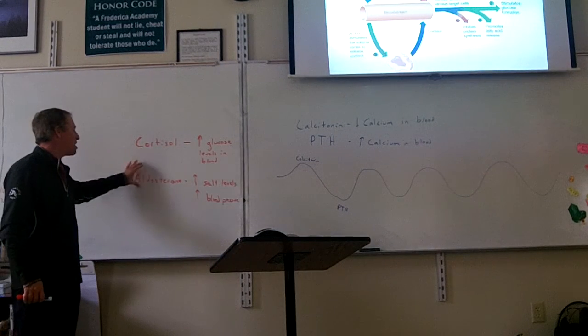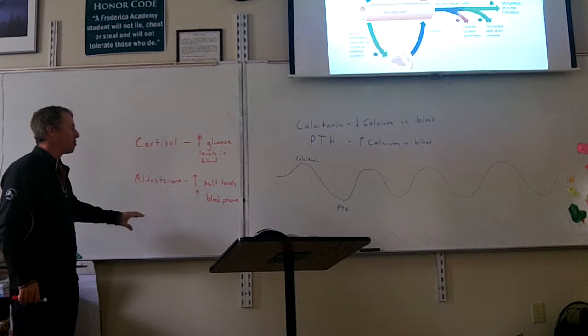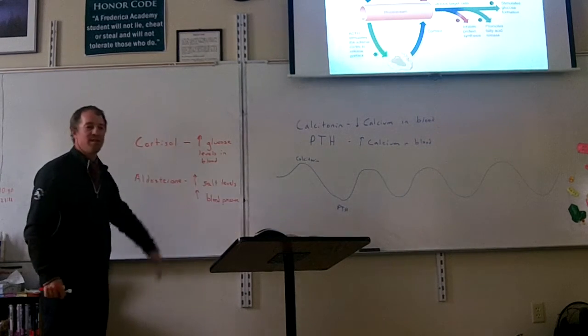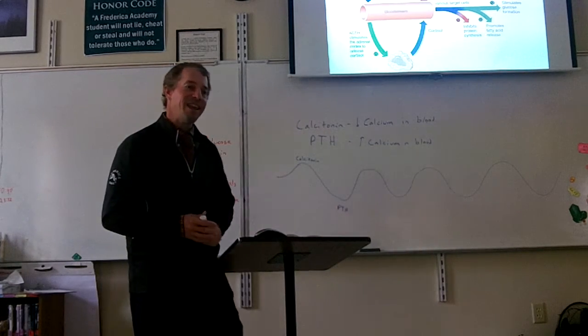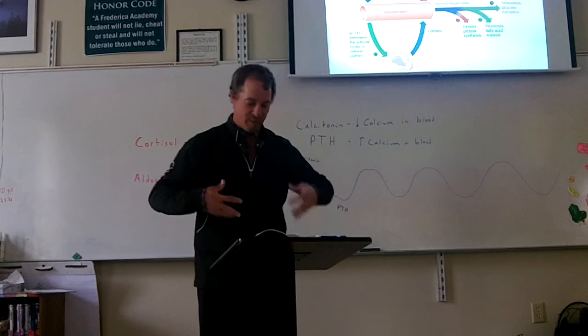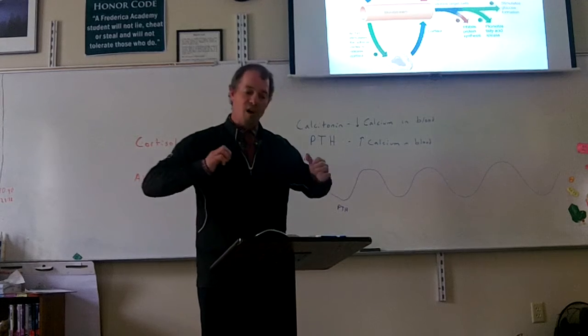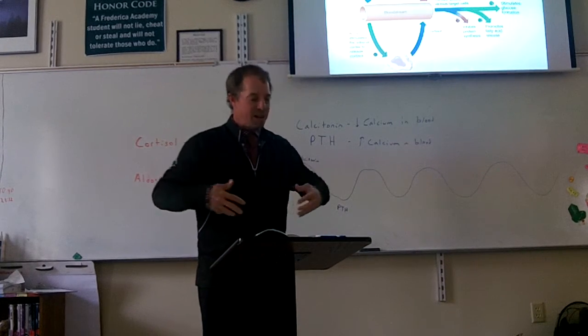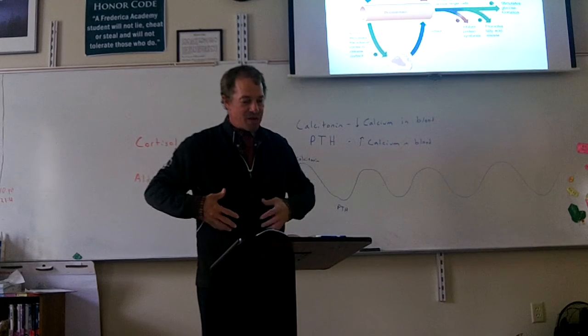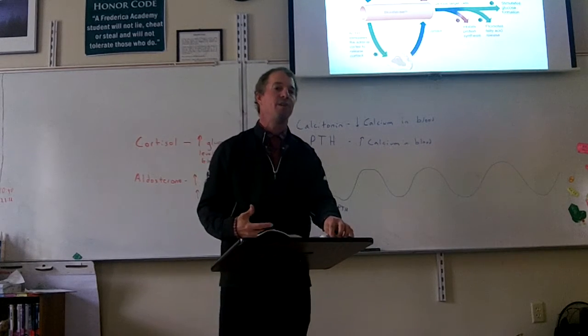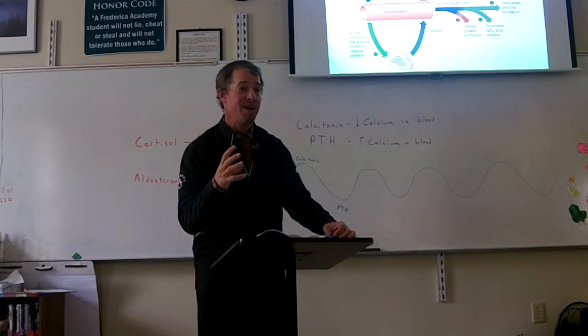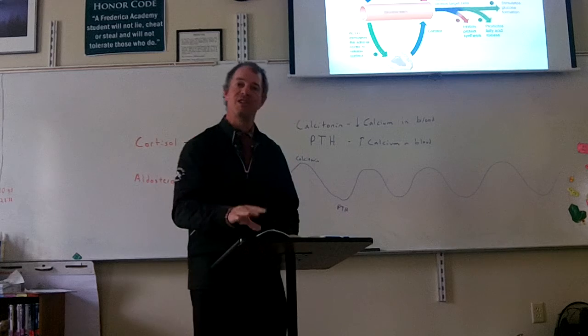So cortisol is a stress hormone that has many effects on the body. And when the cortisol levels get high, that feeds back to the hypothalamus and the pituitary gland and keeps them from releasing their hormones. There's another hormone called aldosterone. So cortisol raises glucose levels in the blood. There's another one called aldosterone that raises salt levels in the blood and raises blood pressure.